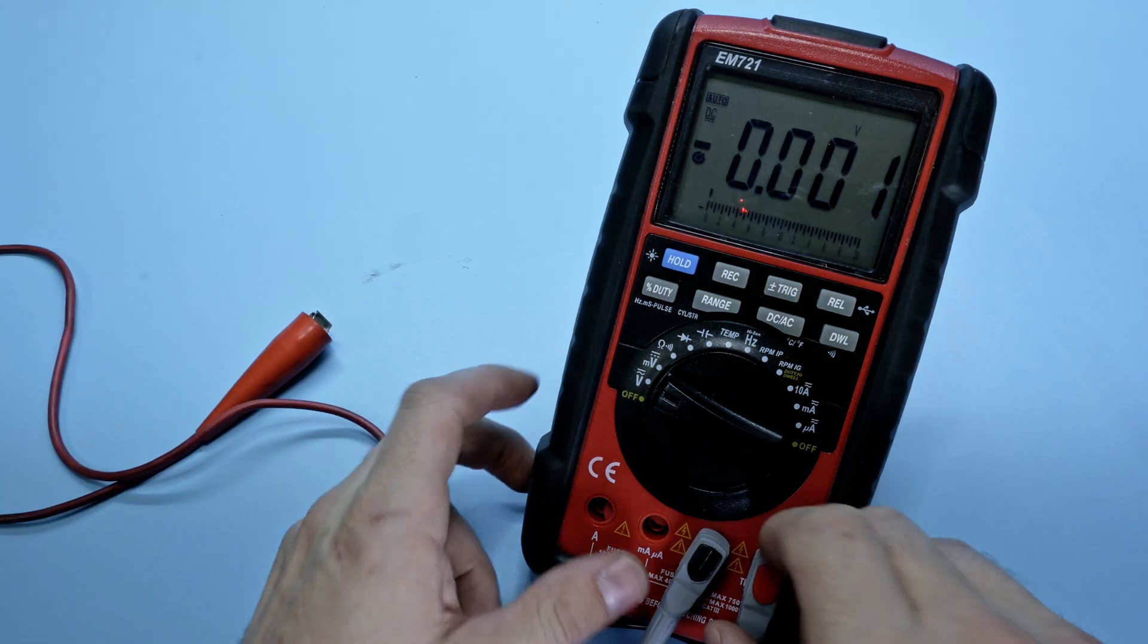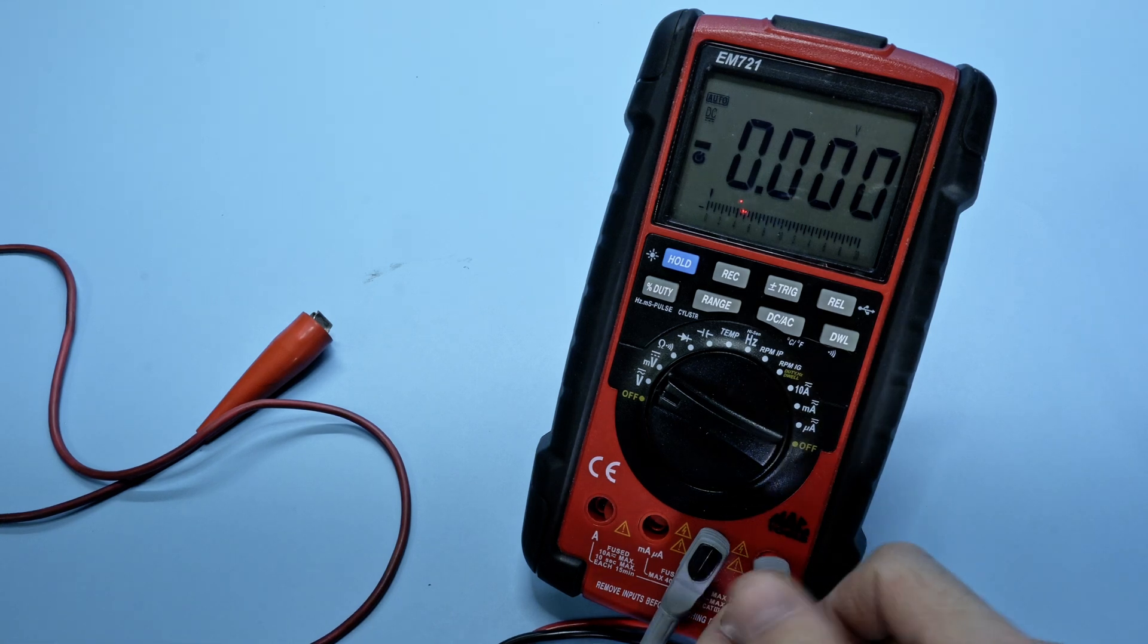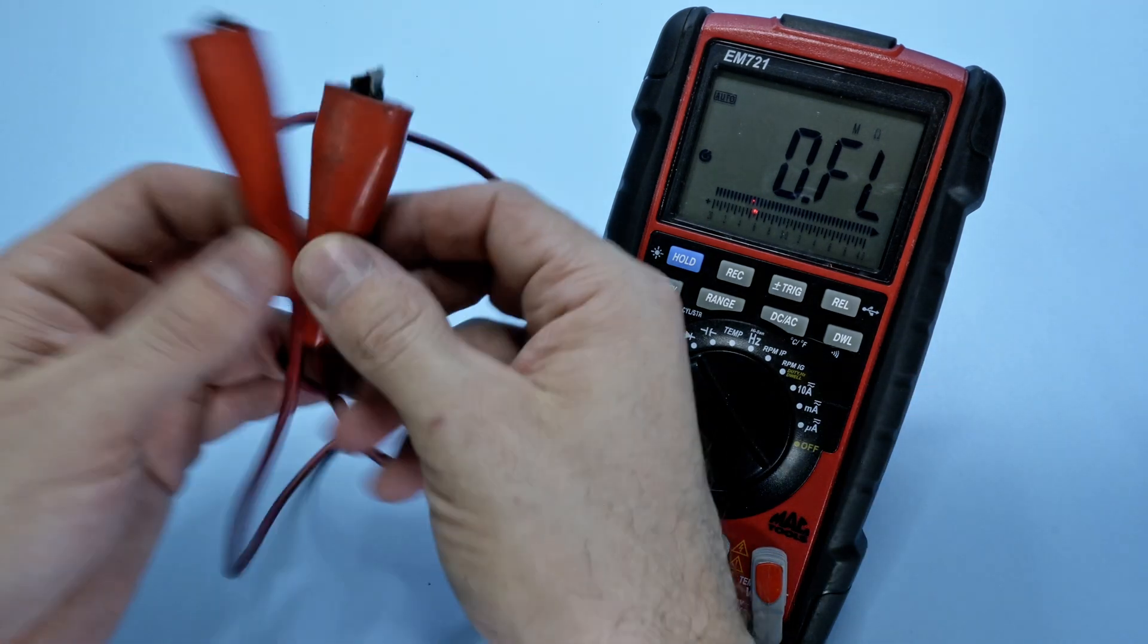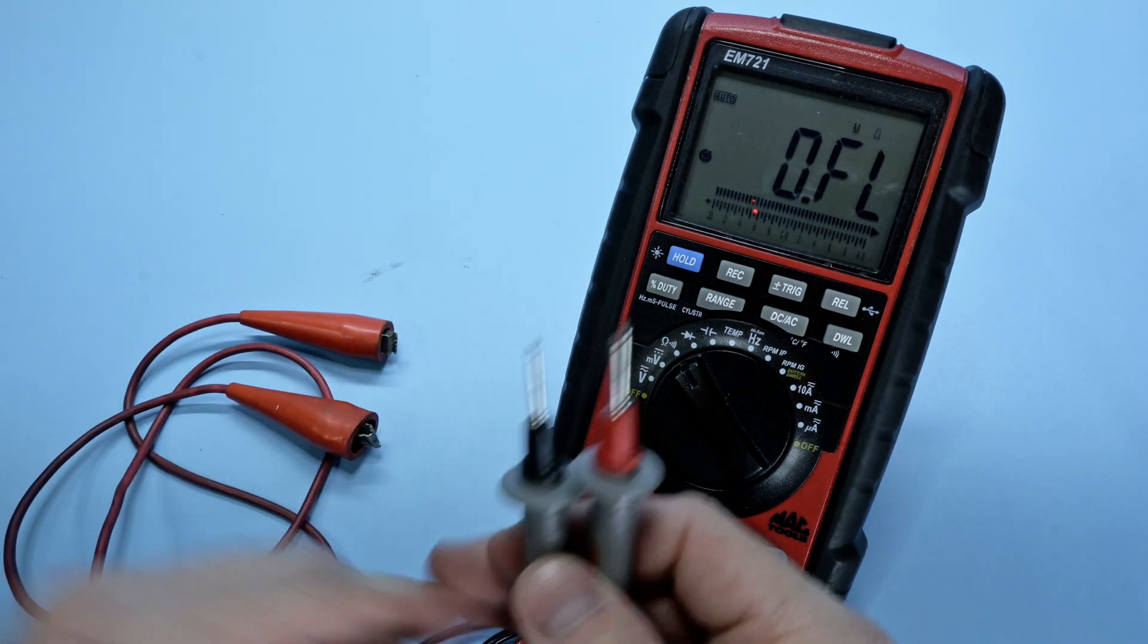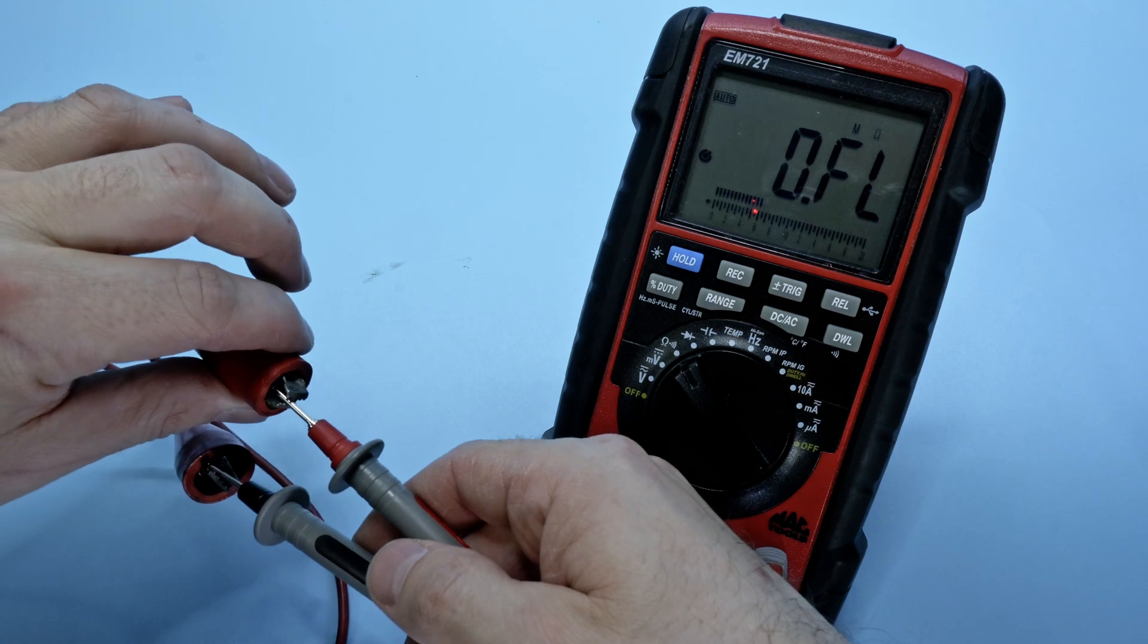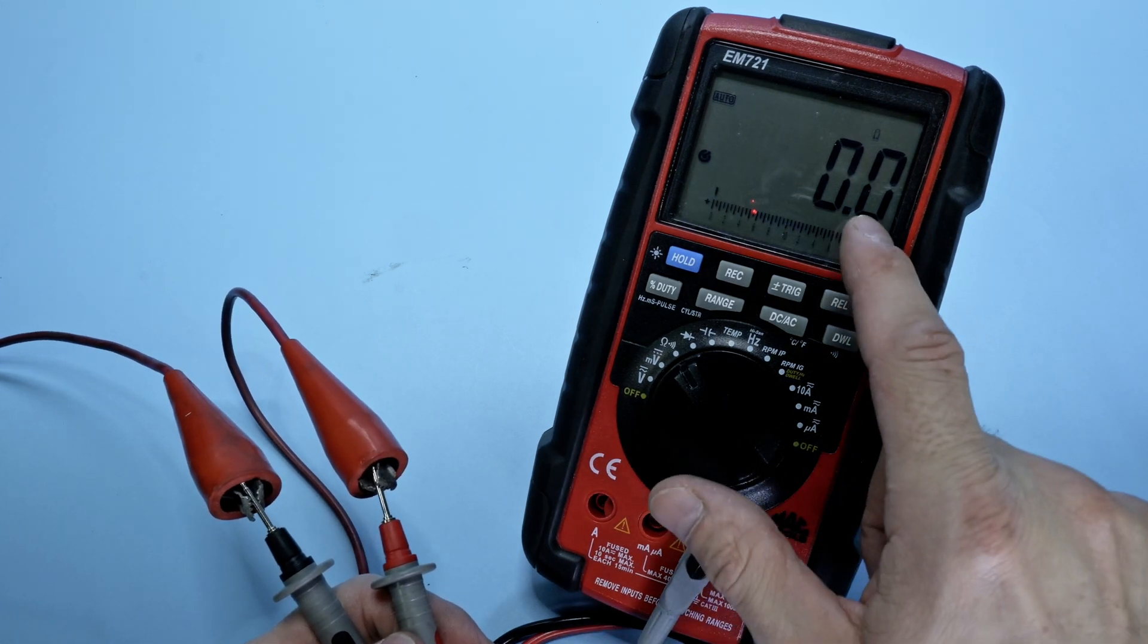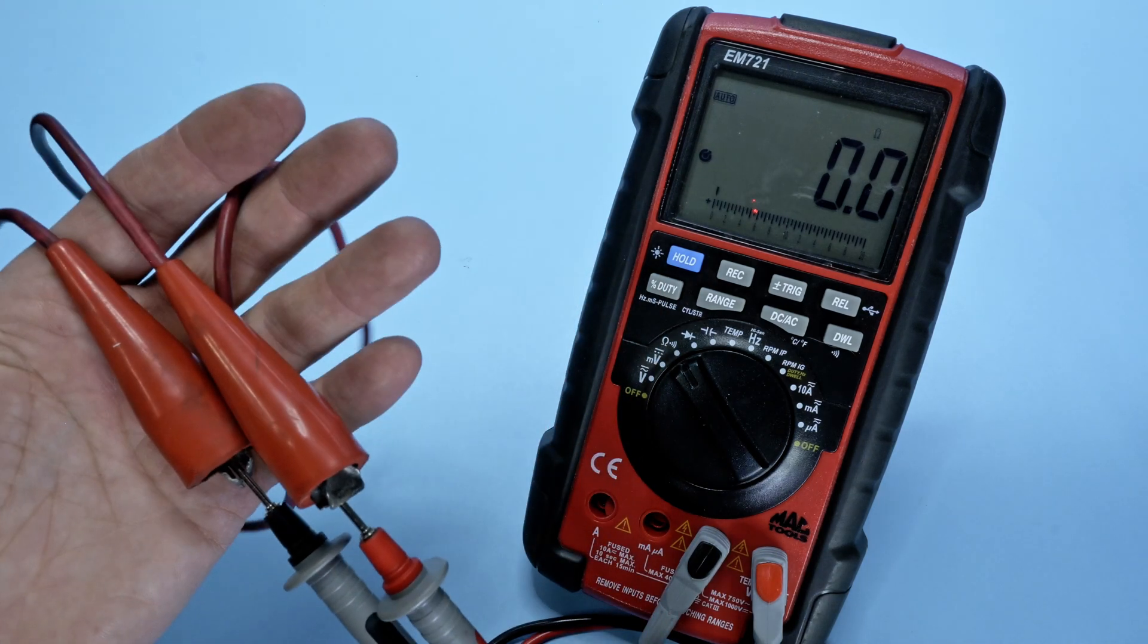To read resistance, we leave our red lead connected in the same port that we used for voltage. And then we simply move our selector knob to the resistance setting. Now, if I wanted to check the resistance of this piece of wire right here, I would simply take my two leads, connect them to my wire, and I should have a very low reading. 0.1 of an ohm. That's not too bad. If I had a higher reading, such as 5, 6, 7, 8 ohms or higher, then I know that there is a fault in this wire, and this is a faulty wire.